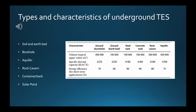A salinity gradient solar pond is an integrated collection and storage device of solar energy. In an ordinary pond, the sun's rays heat the water, which being less dense, rises to the surface and loses heat to the atmosphere. The solar pond inhibits this phenomenon by dissolving salt into the bottom layer of the pond, making it too dense to rise to the surface even when hot. The salt concentration increases with depth, forming a salinity gradient. Sunlight which reaches the bottom of the pond remains trapped there as thermal energy, and useful thermal energy is recovered as hot brine.